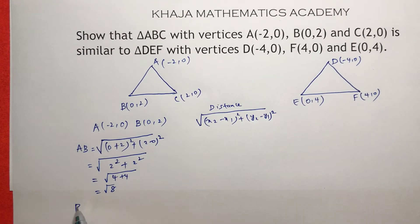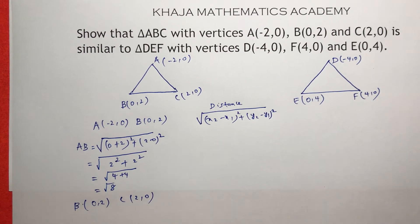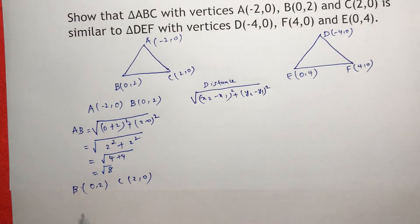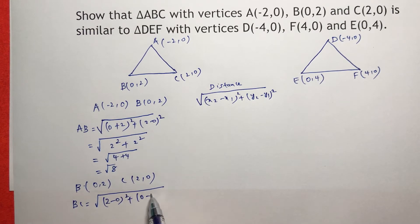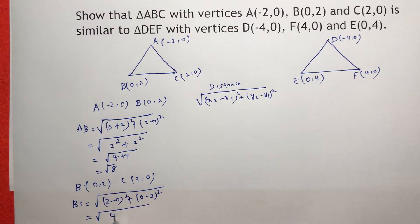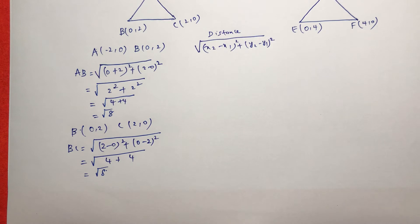In the same way, BC: B is (0, 2) and C is (2, 0). So BC distance will be under root of (x2 minus x1) whole square plus (y2 minus y1) whole square, which gives 4 plus 4, so BC is also root 8.